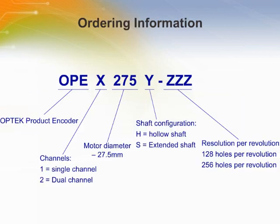The part numbering system identifies each individual encoder, indicating number of output channels, motor diameter, shaft configurations, and resolution per revolution.